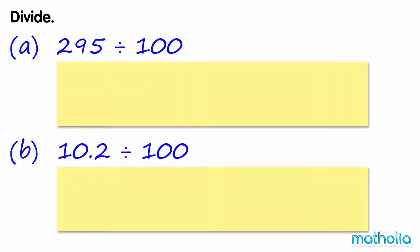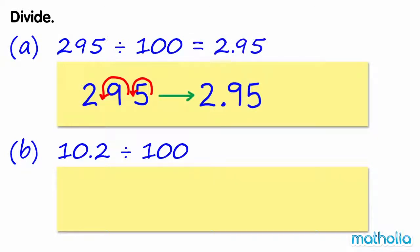Divide. A. 295 divide 100. We can divide by 100 by shifting the decimal point two places to the left. So 295 divide 100 equals 2.95.